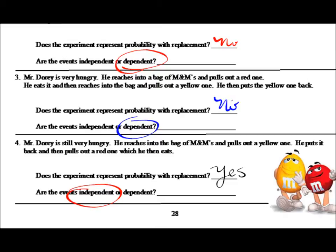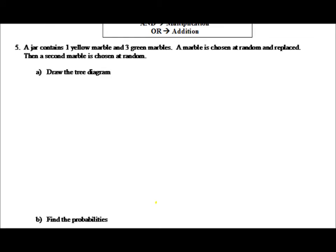Now let's take a moment and actually calculate some probabilities in a few different scenarios. Example five says that a jar contains one yellow marble and three green marbles. A marble is chosen at random and replaced, and then a second marble is chosen at random. So we have probability with replacement.